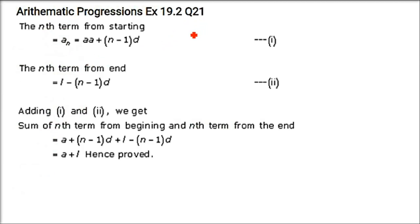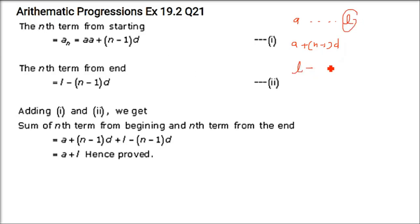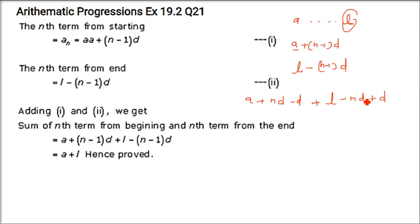The first and last terms of an AP are a and l respectively. Show that the sum of the nth term from the beginning and the nth term from the end is a + l. The nth term from the beginning is a + (n−1)d, and the nth term from the end (taking l as first term going backwards) is l minus (n−1)d. Adding them: a + (n−1)d + l − (n−1)d, the (n−1)d terms cancel, giving a + l. This is what was to be proved.